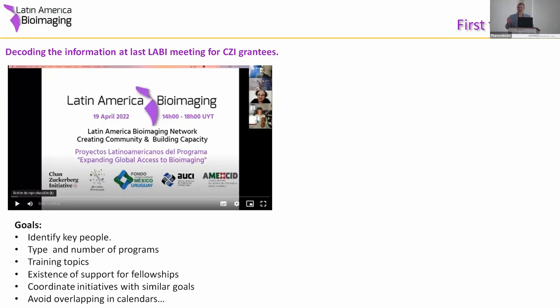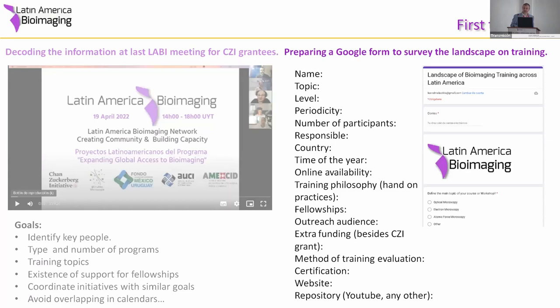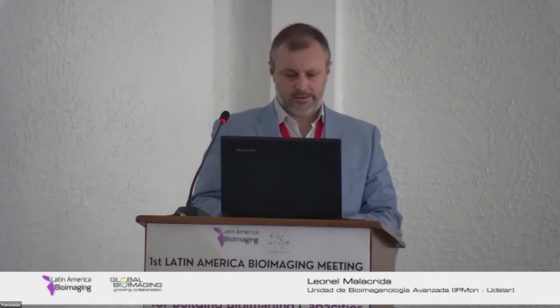With 13 grantees, there will inevitably be some competition for time and students. LABI can help avoid unnecessary competition. We are also preparing a Google Form to reach bioimaging people across Latin America one by one and through all our communication channels to understand what is out there.